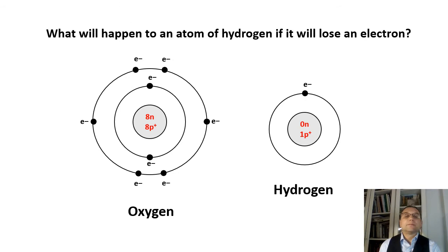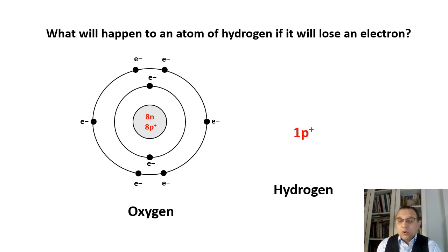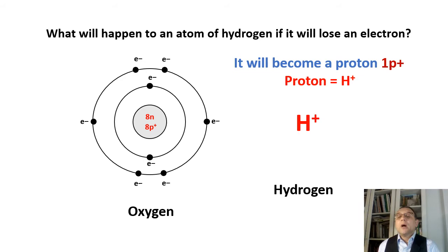What will happen to an atom of hydrogen if it loses an electron? Well, there will be one proton left — and that's what we refer to it as: a proton. Usually we abbreviate it as H+, hydrogen positive. But it's not an atom anymore — it becomes an ion.